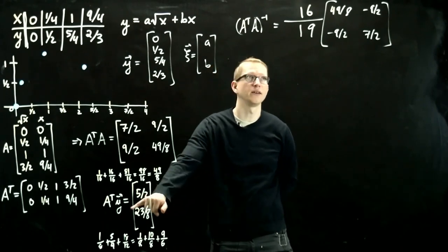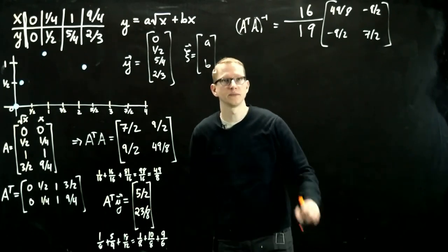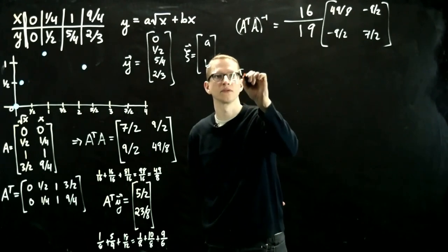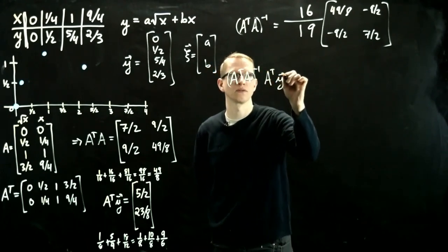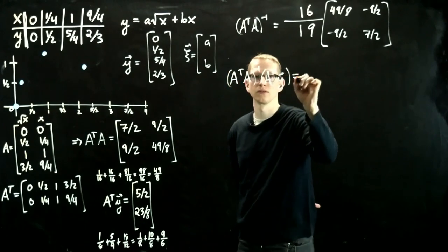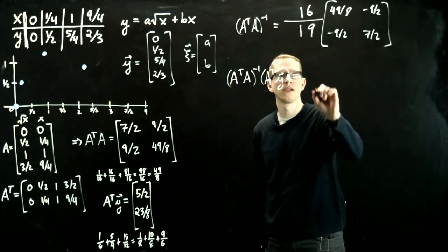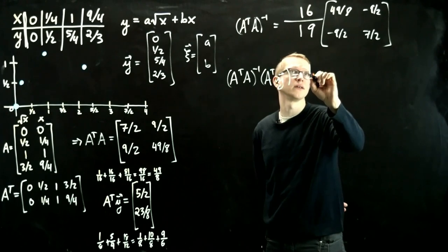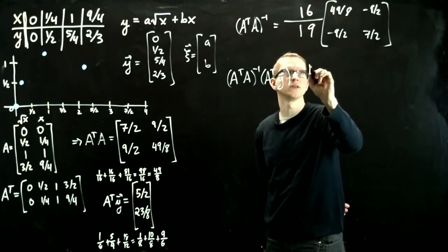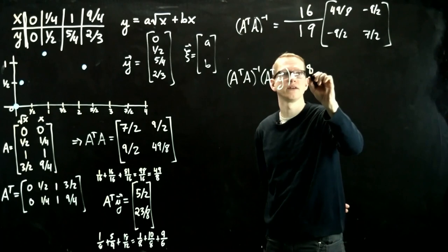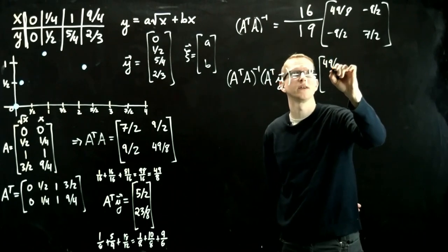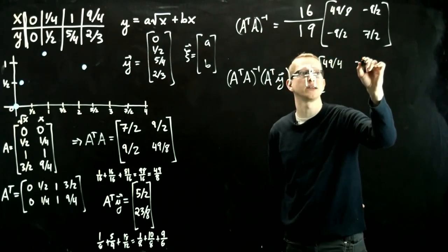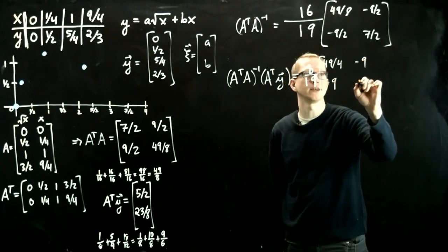So then when we apply that matrix to this vector, what do we get? We can even cancel some of these, right? So this is going to be 8 over 19. And let's write this matrix is 49 over 4, negative 9, negative 9, and 7.